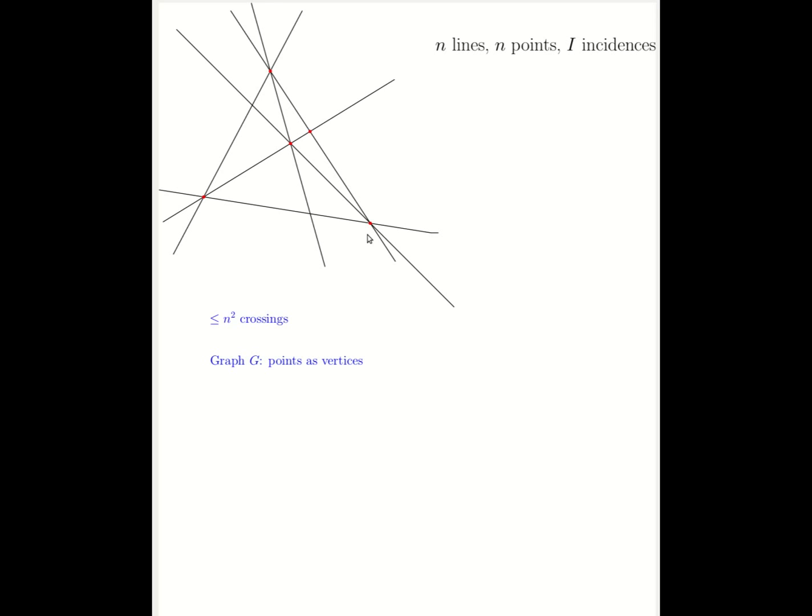The observation that we can make here is that if you pick a line that has t incidences, that line defines t minus 1 edges. In the picture, the blue line has 3 points on it, and therefore it defines 2 edges.